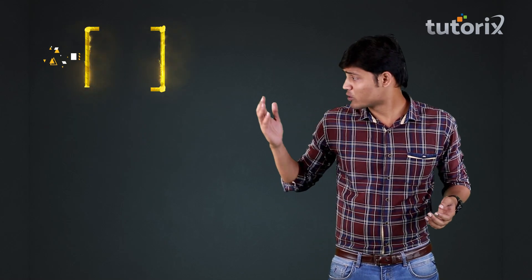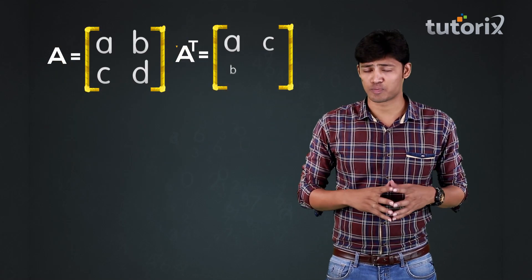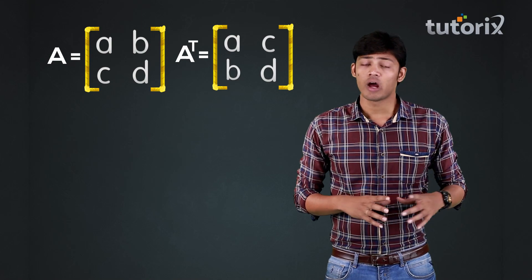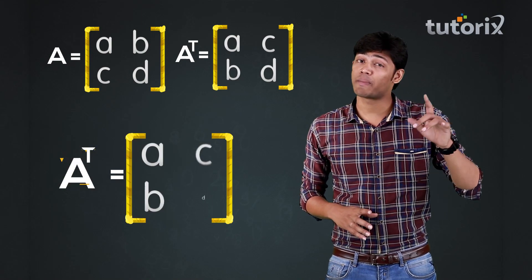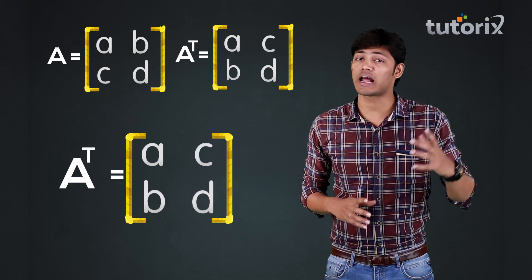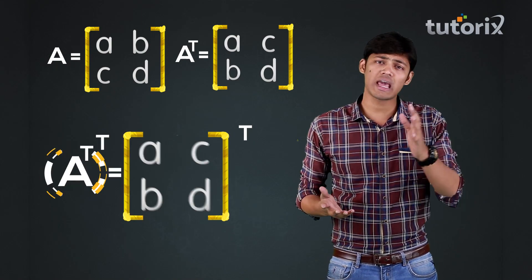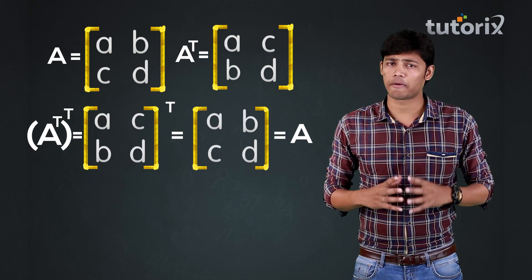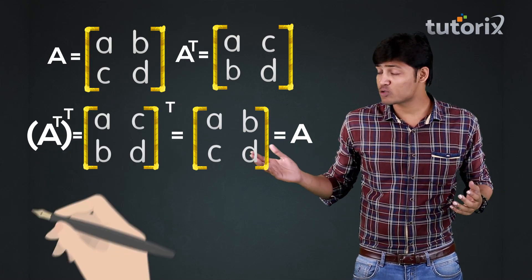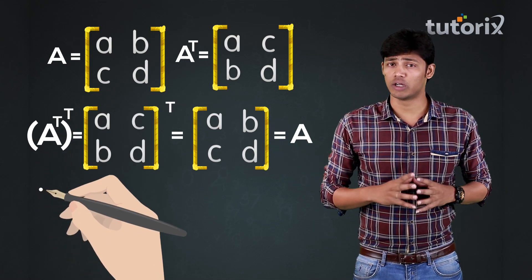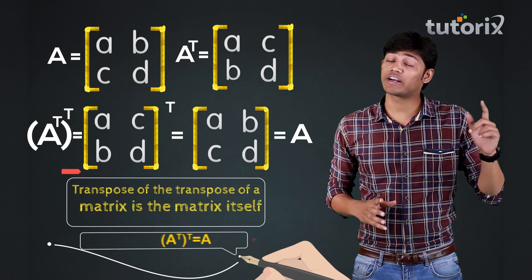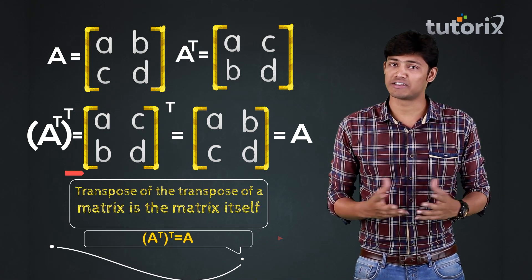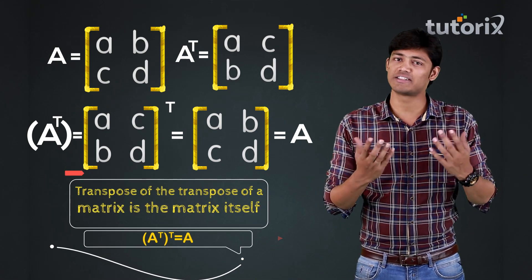Let us now discuss some properties of the transpose of a matrix. Here we have the matrix A and its transpose. The transpose of the matrix A transpose will be the same as A. So from this we can conclude that the transpose of a transpose of a matrix is the matrix itself.